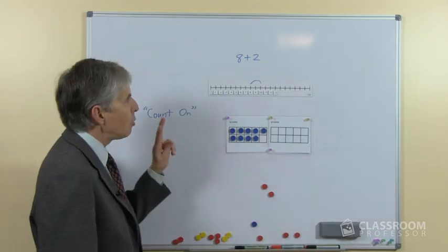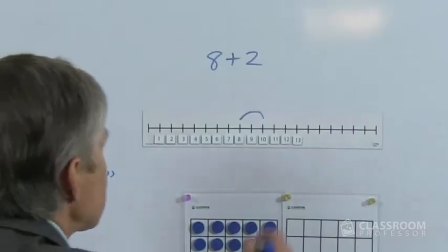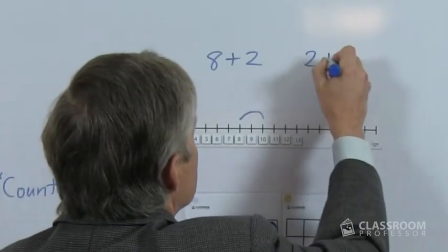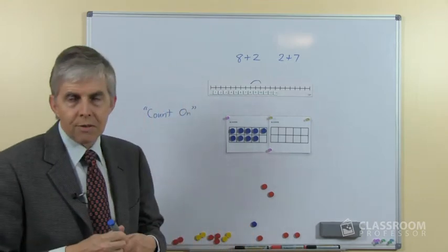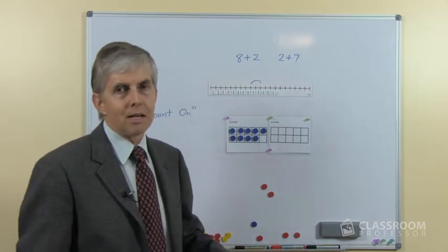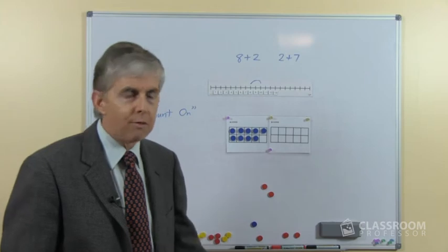The other thing to say is that we will sometimes ask the students for the number facts in the opposite direction, 2 plus 7, and of course we don't want them to start at 2 and count on 7, that would be ridiculous.